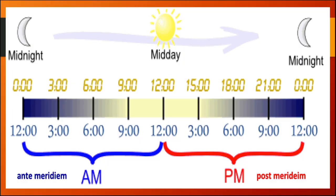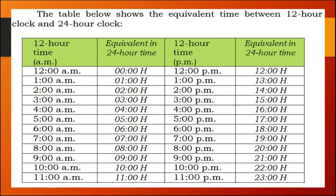Here is a comparison between the 24-hour clock and the 12-hour clock. At the top is the 24-hour clock showing time, and at the bottom we have the 12-hour clock. The table below shows the equivalent time: 12 AM is equal to 0000 hours; 1 AM is 0100 hours; 2 AM is 0200 hours; 3 AM is 0300 hours, and so on. 12 PM starts at 1200 hours; 1 PM is 1300 hours; 2 PM is 1400 hours, and so on.